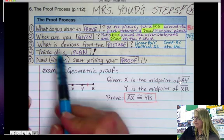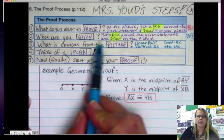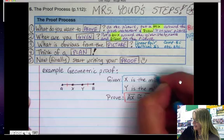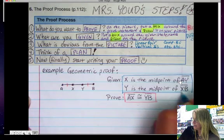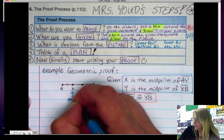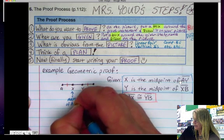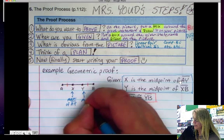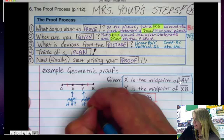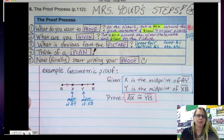Now my next step, what am I given? So I'm going to use this bright teal color to draw this on the picture. So I'm given that X is the midpoint of AY. So this is a midpoint of AY. And I'm also given that this is a midpoint of XB. So those are my two midpoints.